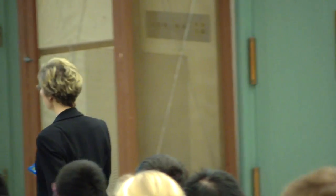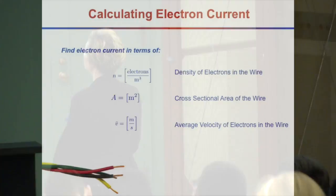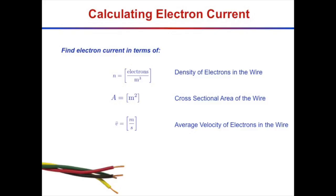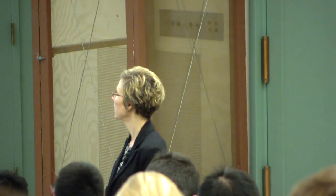Little n is the density of electrons in the wire — electrons per unit volume — and this is something you look up from the material. If you've got a copper wire, it has a particular number of free electrons per unit volume available to carry current. A silver wire will have a different number.